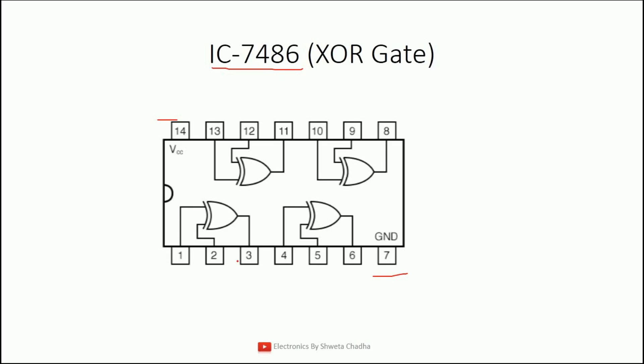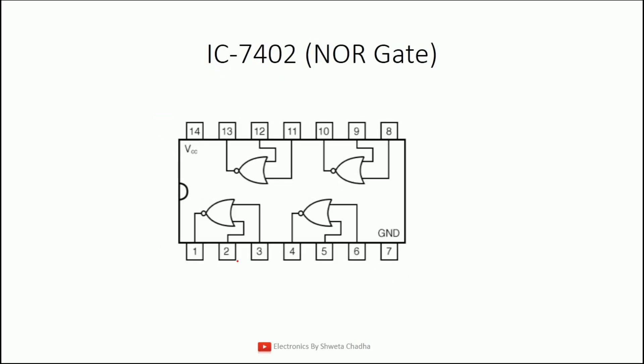So, except for the NOT gate, in all the remaining pin diagrams discussed, with a single IC you can implement a total of 4 gates, whereas in the NOT gate IC 7404 we can implement a total of 6 gates.